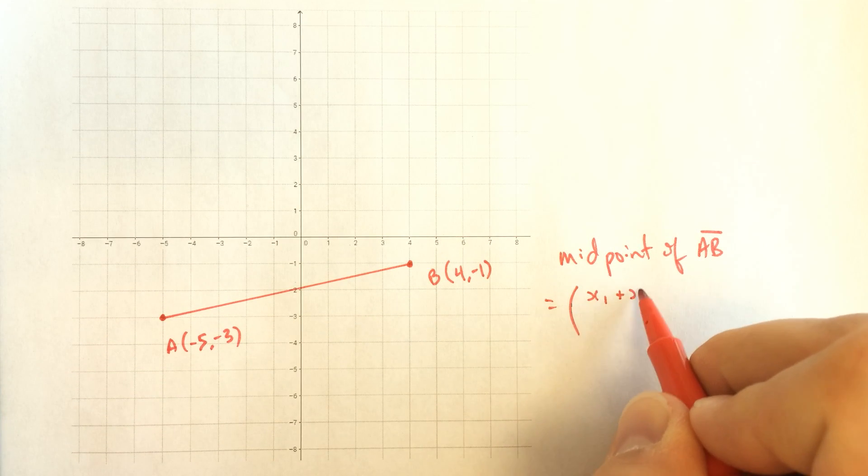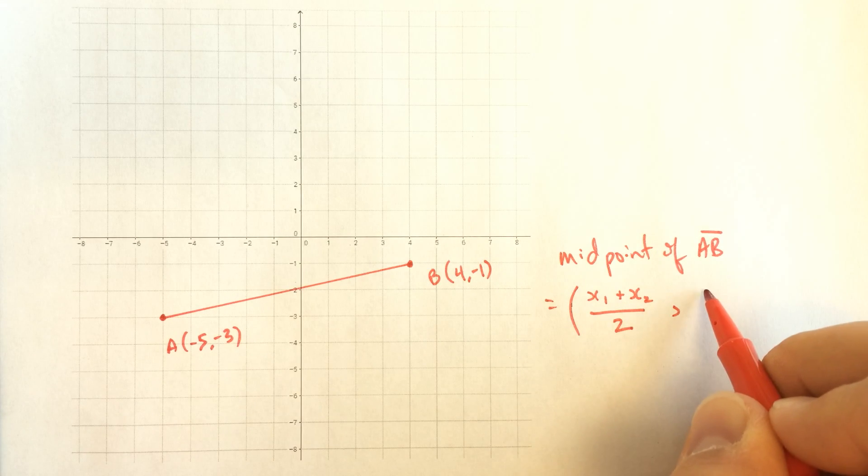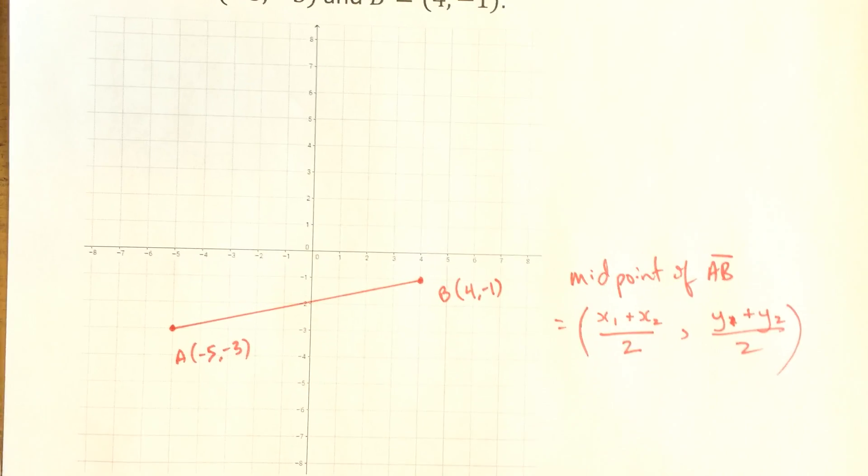So often you'll see a formula like this one. Add up your two x values and divide by 2. Add up your two y values. Actually, order doesn't matter, but let's try to be consistent and divide by 2.